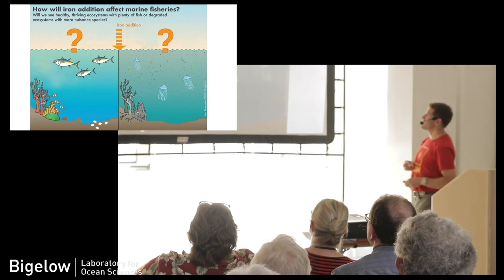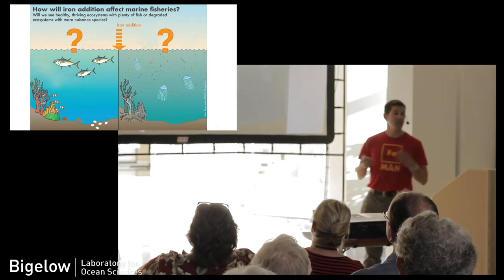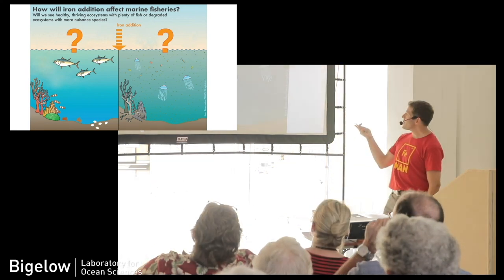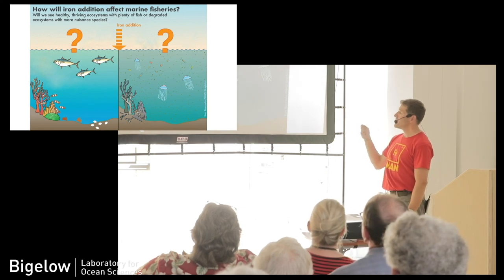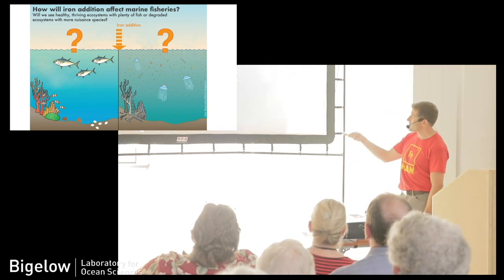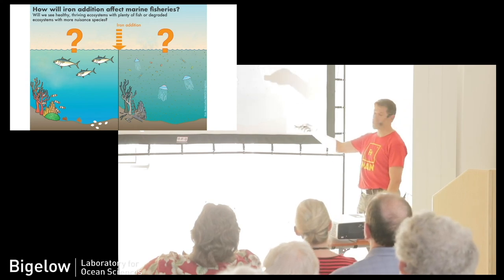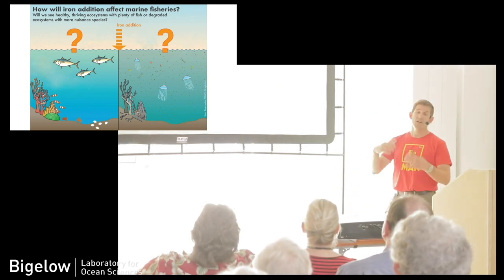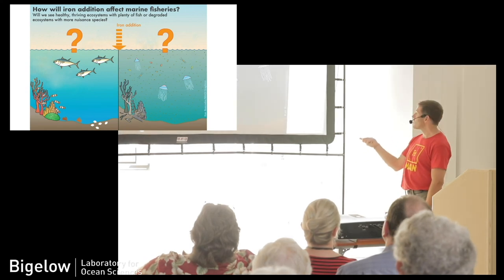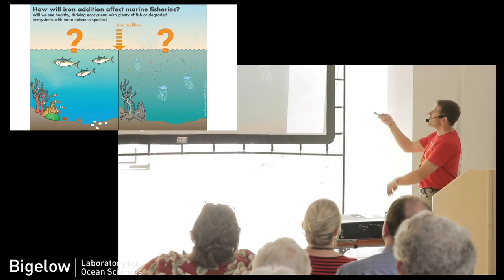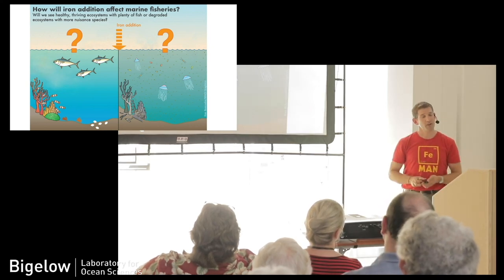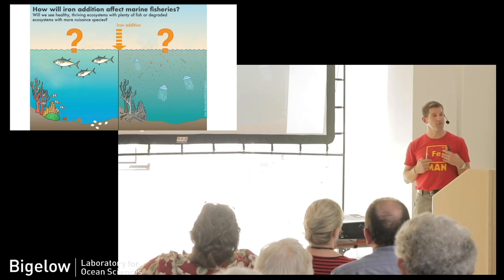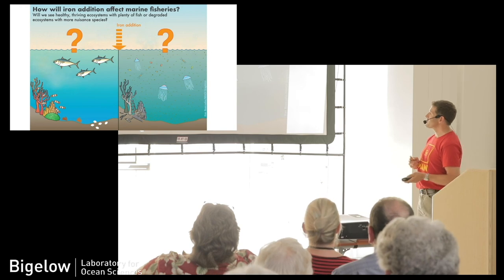Getting back to this question that I started in the first half, how will iron addition affect marine fisheries in the ocean? I think the important part of this is that there's a real question mark. If we add iron to the ocean, will we get more of this ecosystem that we might like with fish that we like to eat and healthy things that live on the bottom of the ocean, organisms living there in relatively clear waters, or maybe an ecosystem that has more gelatinous zooplankton or more cloudy waters? We don't know what the iron addition will do. This gets to that point that was raised after the discussion break, that one of the biggest concerns with iron experiments that humans would do is that uncertainty. That's something we're trying to address in our work.